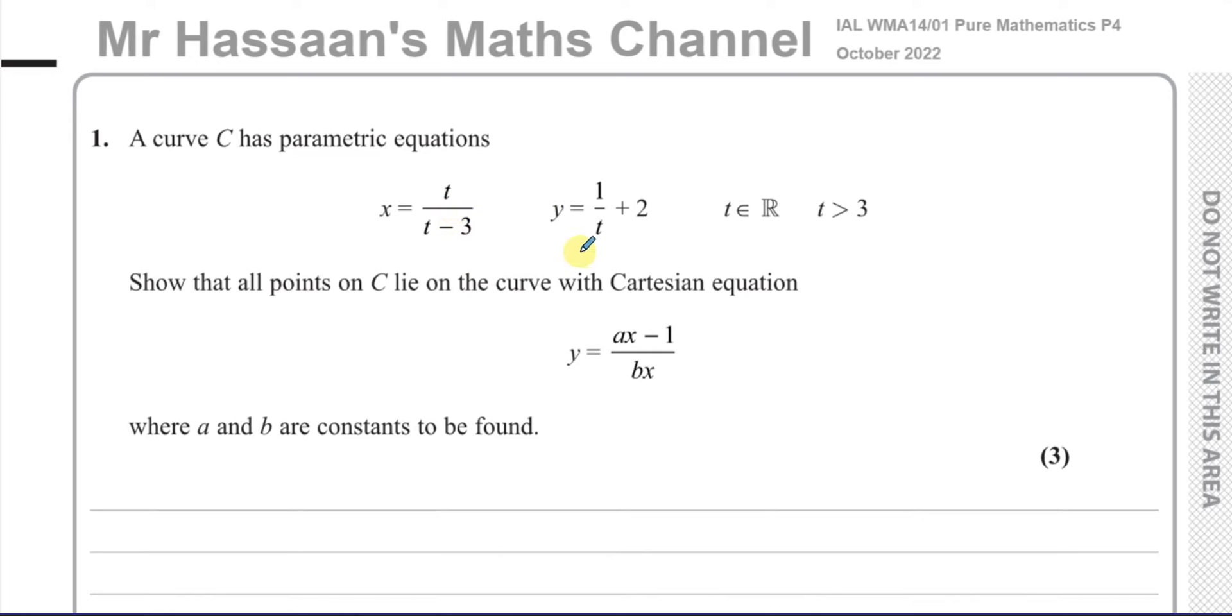So what I can do is, I'll have everything as y equals, y will be the subject automatically that way. So I think it's easy for us to take the equation x equals t over t minus 3 and make t the subject of this equation by rearranging it.